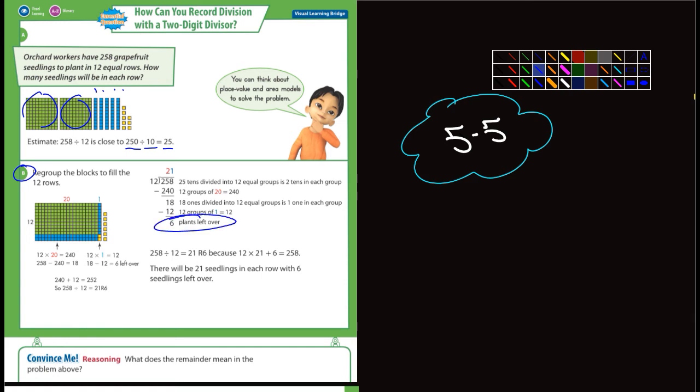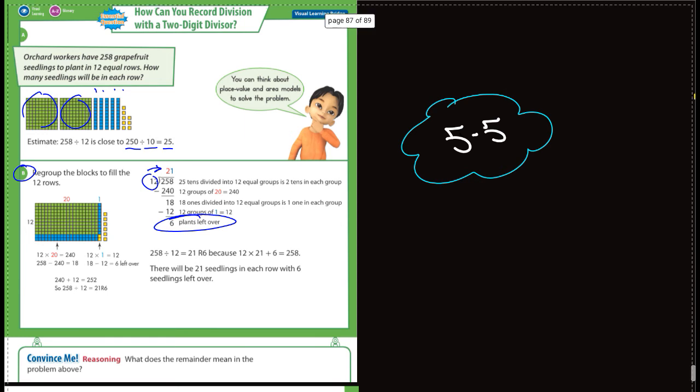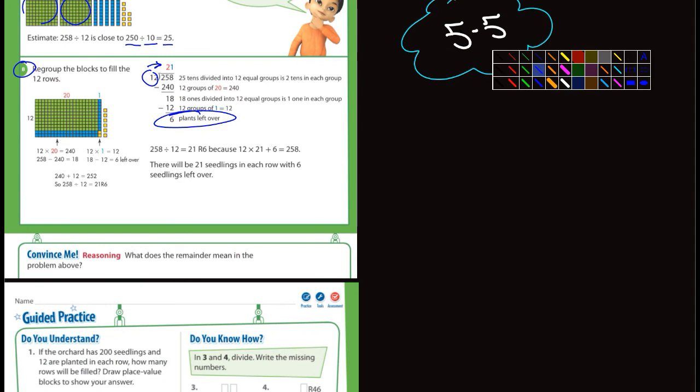They point out that there's some left over, it doesn't come out evenly. It says right here there's six plants left over which would essentially be the remainder, and it says there'll be 21 seedlings in each row with six seedlings left over. Down at the bottom it says convince me, what does the remainder mean in the problem above? Well simply the remainder is the number of plants or seedlings left over. In other words they didn't fit into a row of 12.